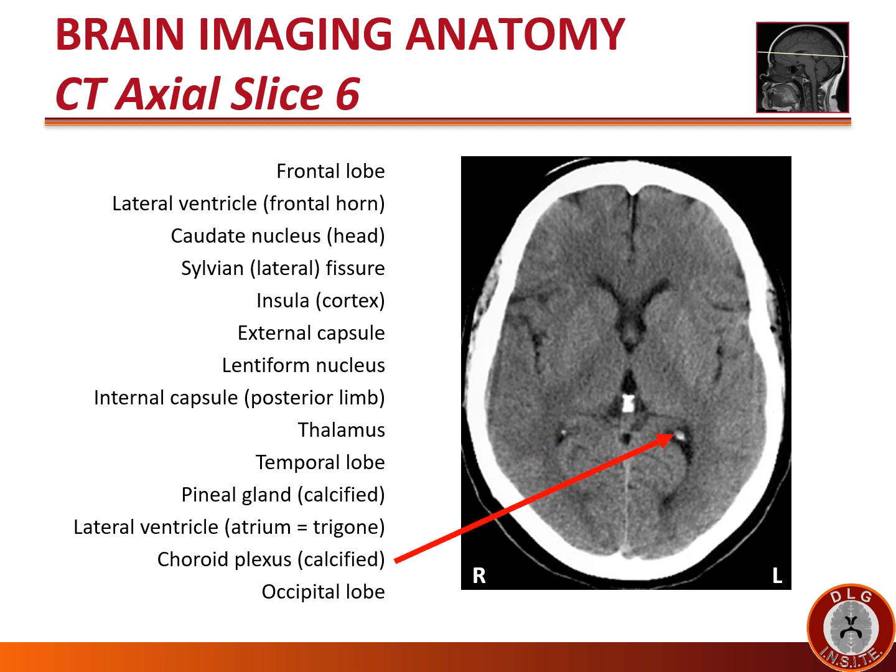In this image we see a white or hyperdense area within the atrium — this is the choroid plexus. The choroid plexus makes cerebrospinal fluid and is commonly calcified, so it appears white on CT scans. It is commonly seen within the atria of the lateral ventricles.